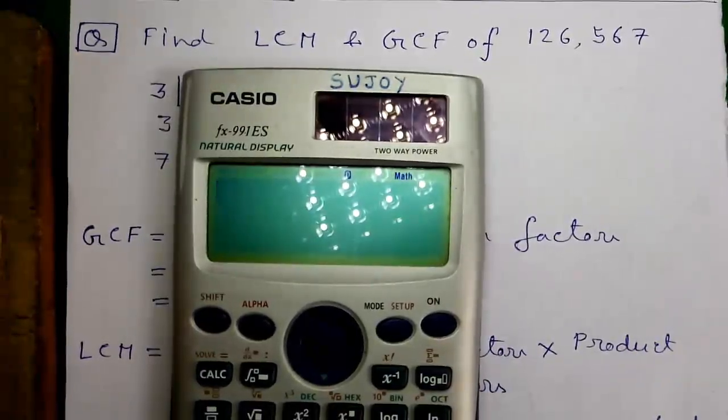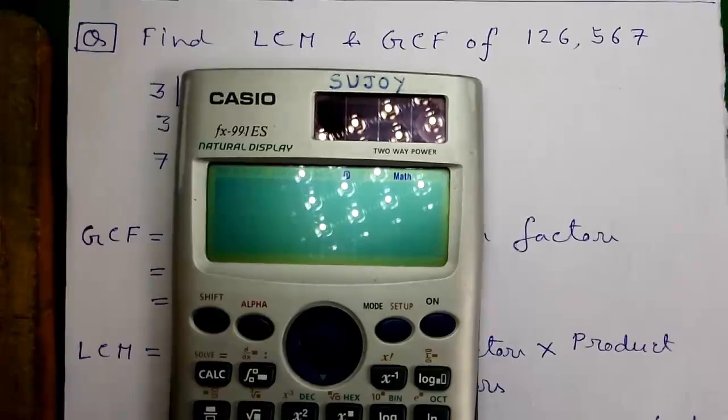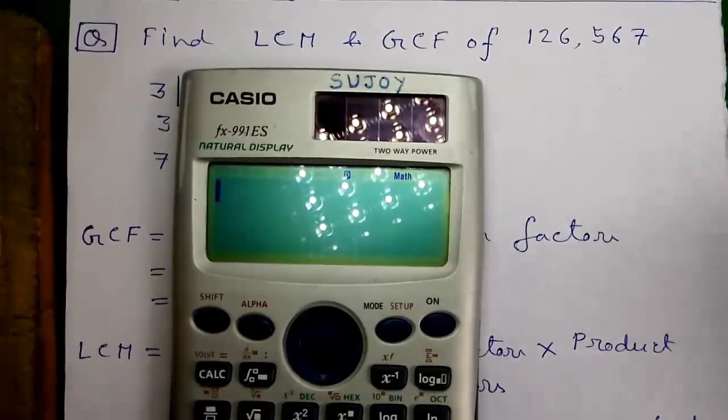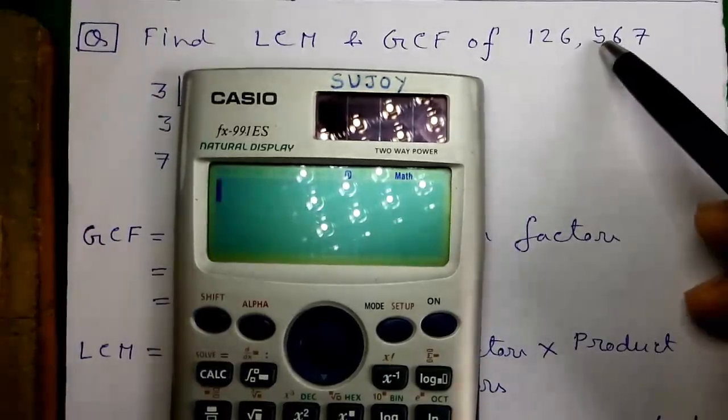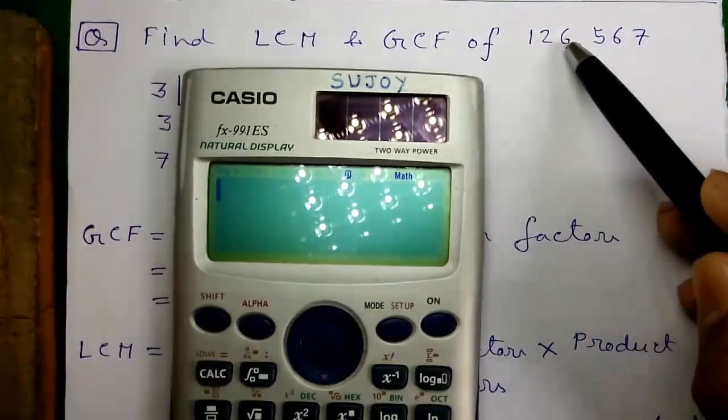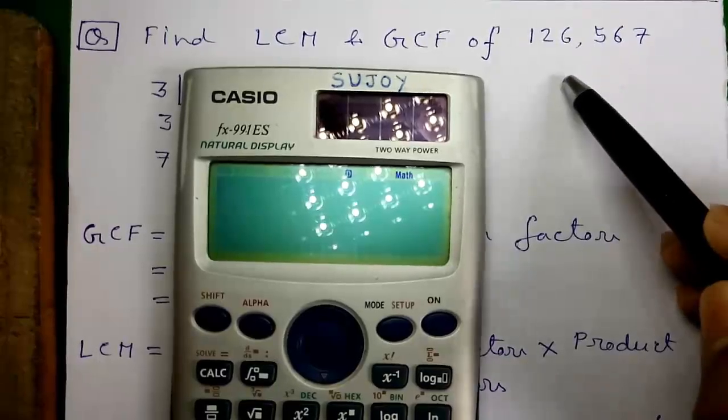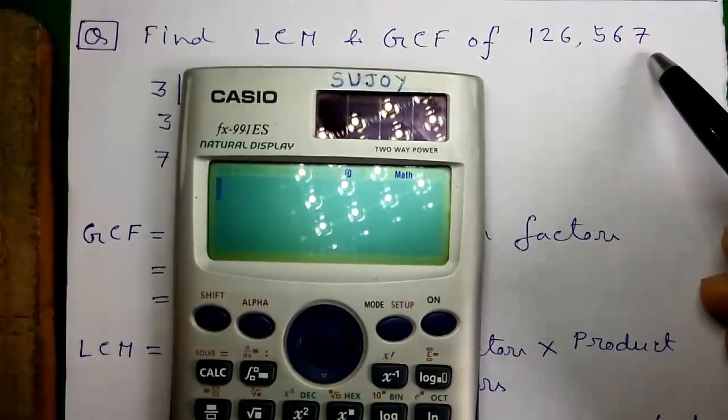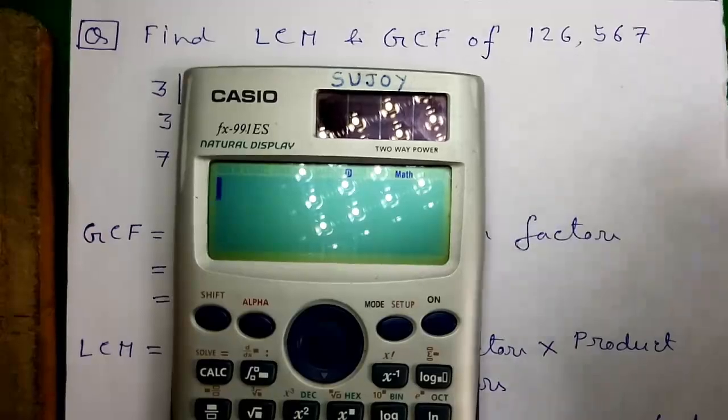LCM stands for the lowest common multiple and GCF stands for greatest common factor. So the process is very simple. Just consider the largest number as A and the smallest number as B, and perform the operation A minus B continuously. So let's do it.